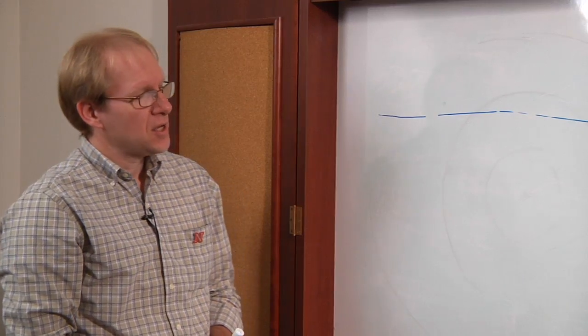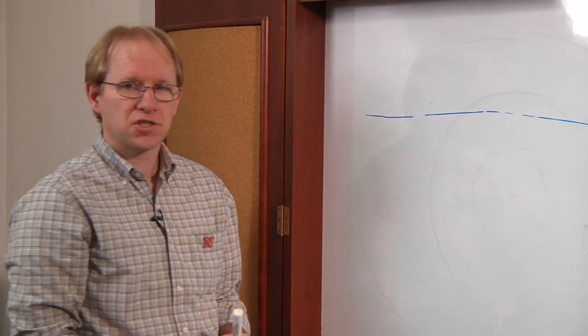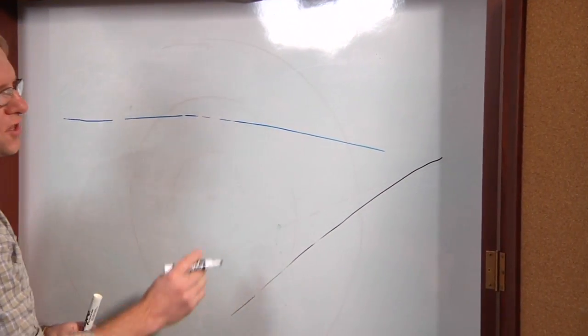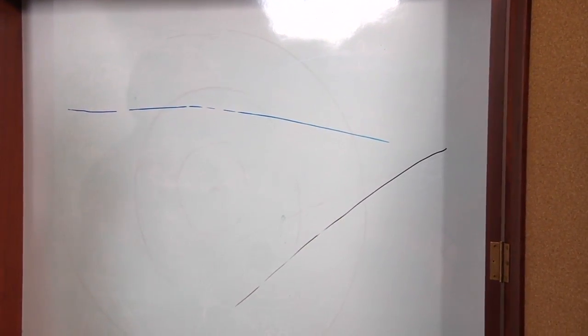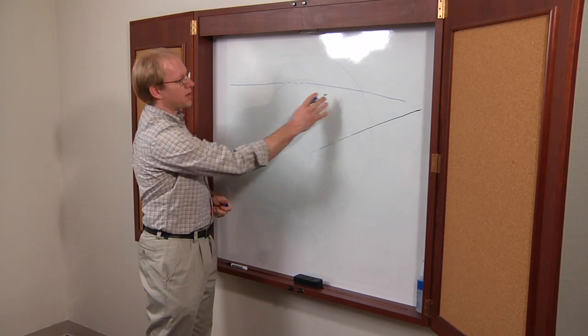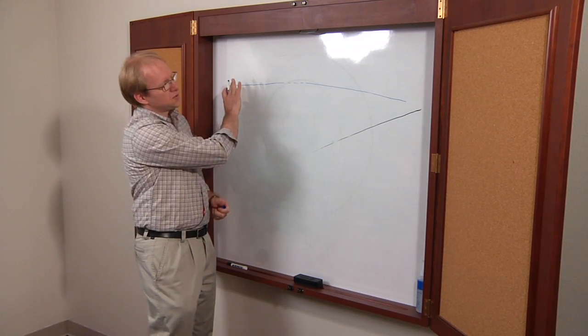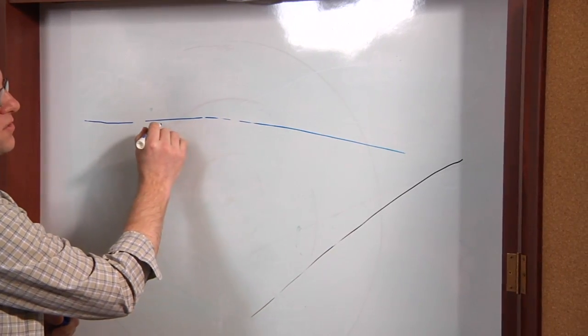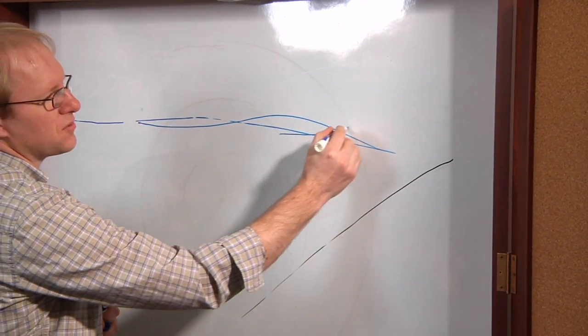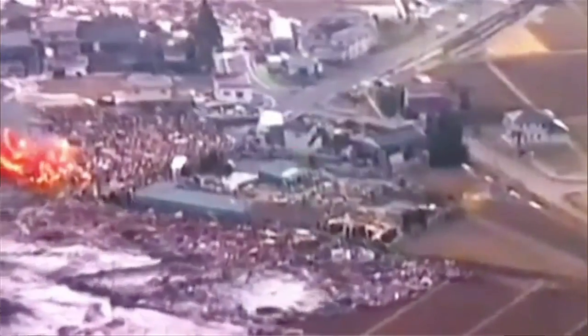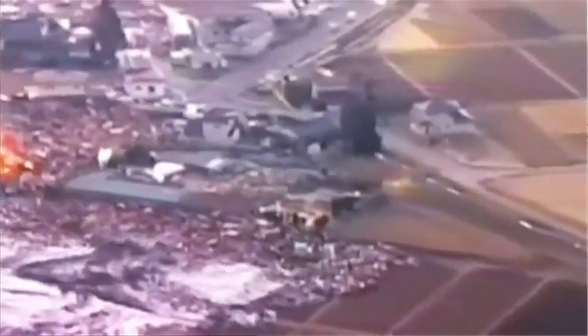When it gets to shore where it's much shallower, the wavelength of this wave decreases a lot because the speed decreases. The front end of the wave travels much slower than the back end, so the back end catches up to the front. The wave starts to develop higher and higher amplitude until it gets to very shallow depths where it often breaks, and it's so high that it can cause damage to anything on the land surface near the ocean.